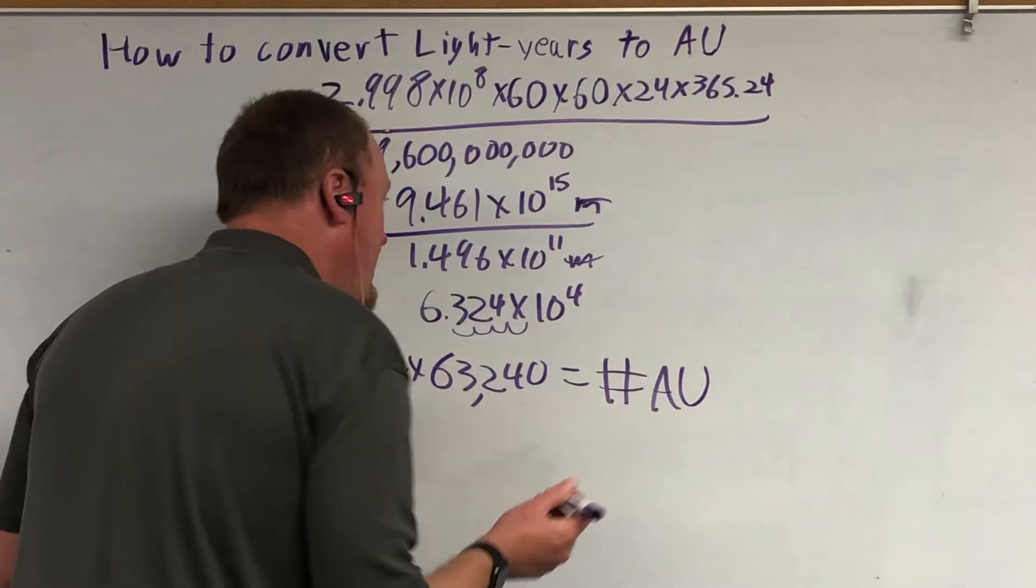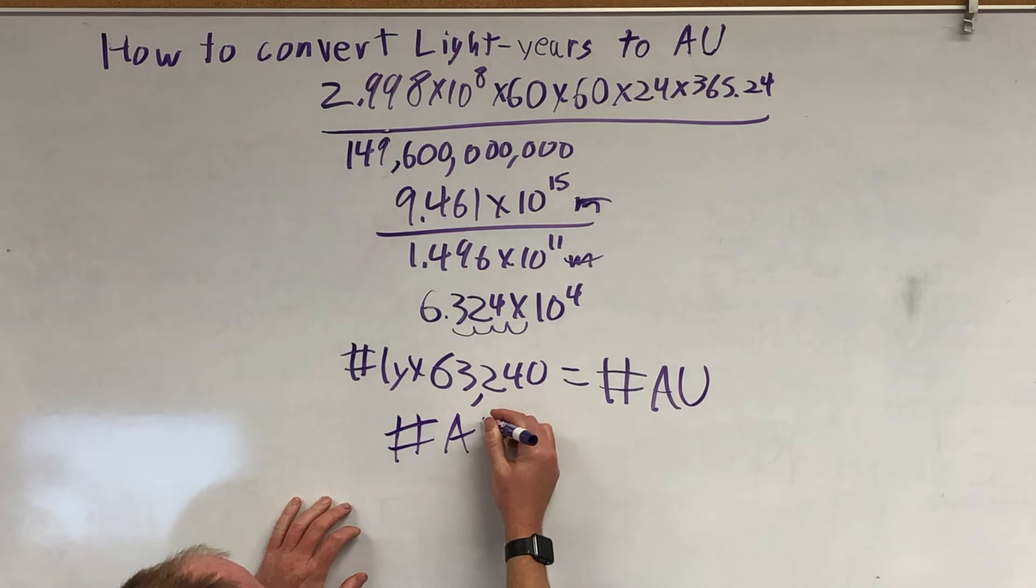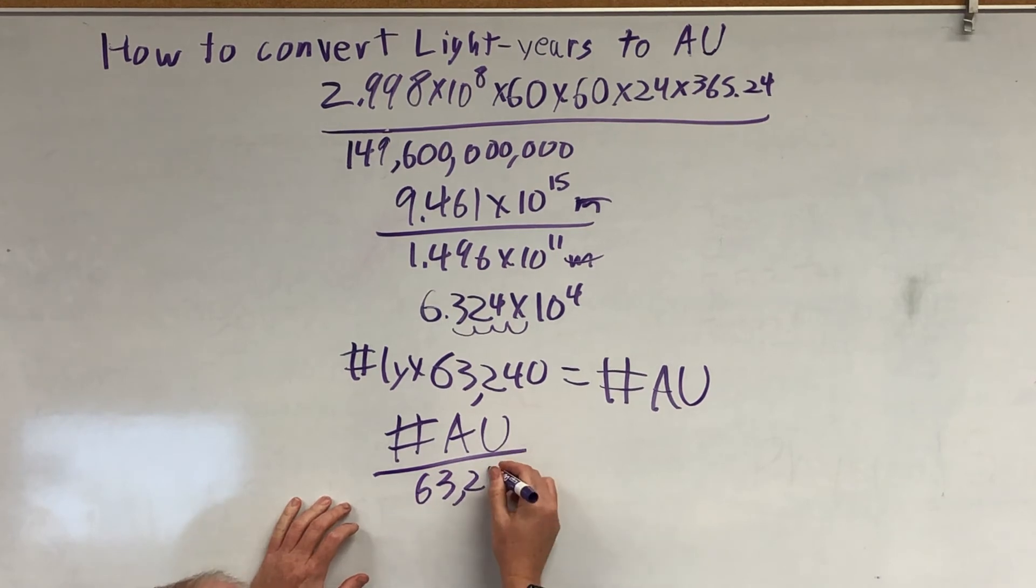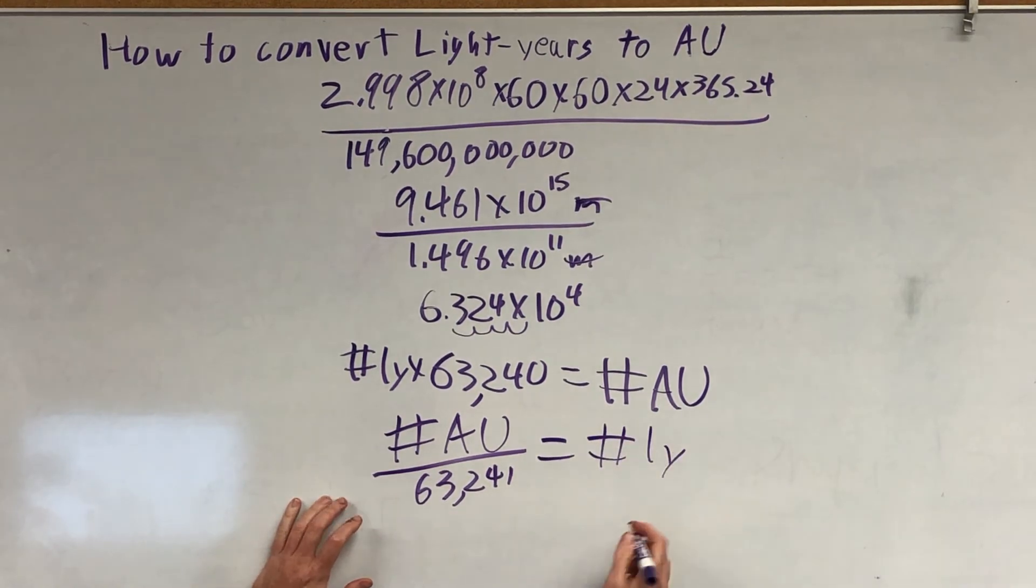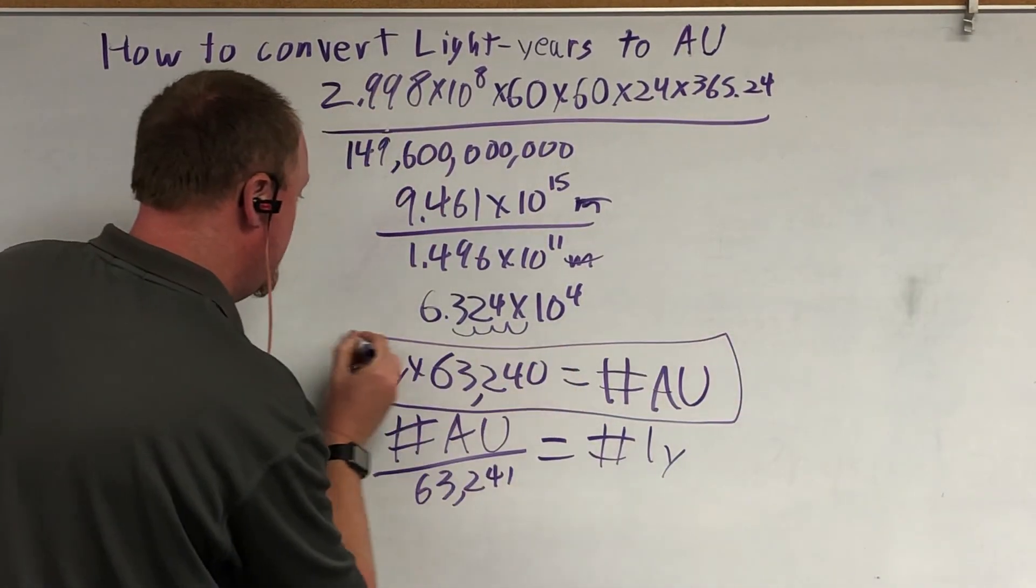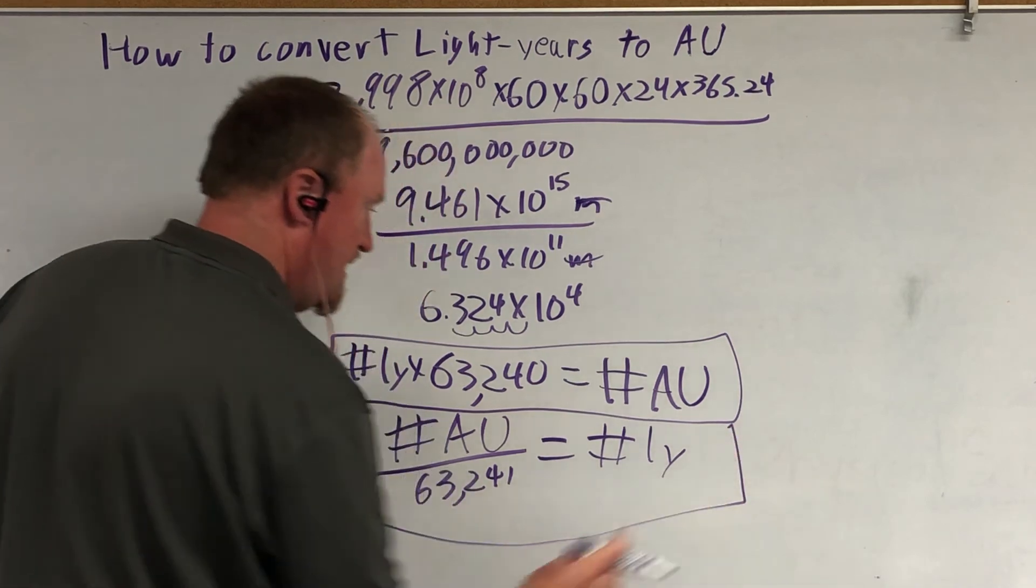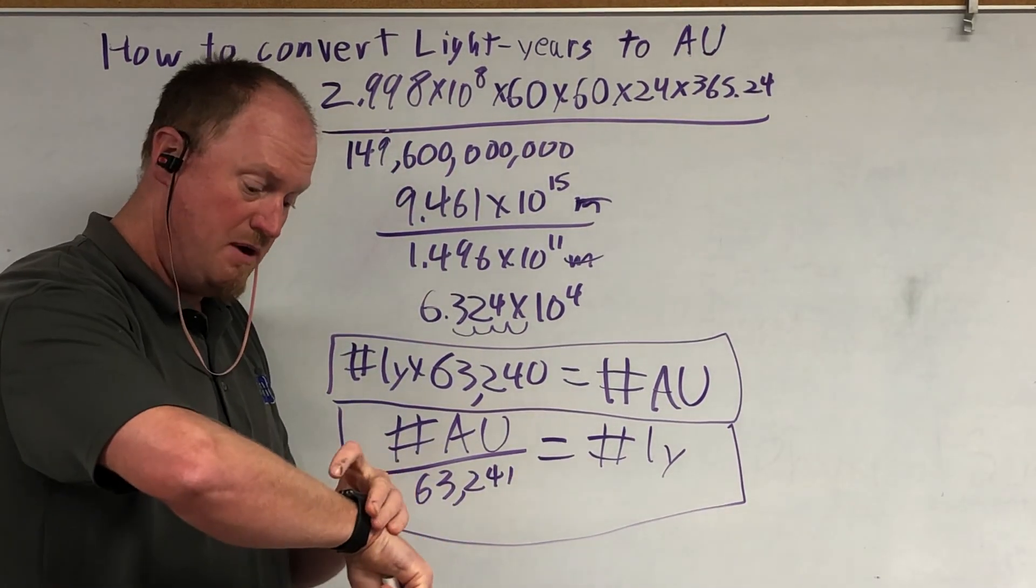By the way, of course, if you want to go the other way, then the number of AU divided by 63,241 is equal to the number of light years. So those are your conversions. And I hope you found this helpful. Have a nice day. Bye-bye.